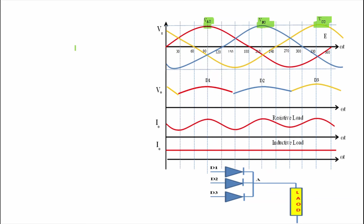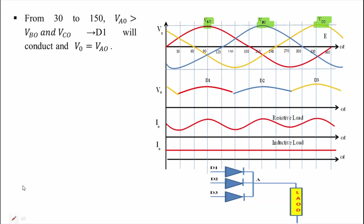From 30° to 150° (ωt = 30° to 150°), we can see that the waveform of phase A is the highest — Va0 is greater than Vb0 or Vc0. So here Va0 is highest, and only diode D1 will conduct because Va0 is applied to diode D1. In this case, we will get output voltage V0 = Va0.